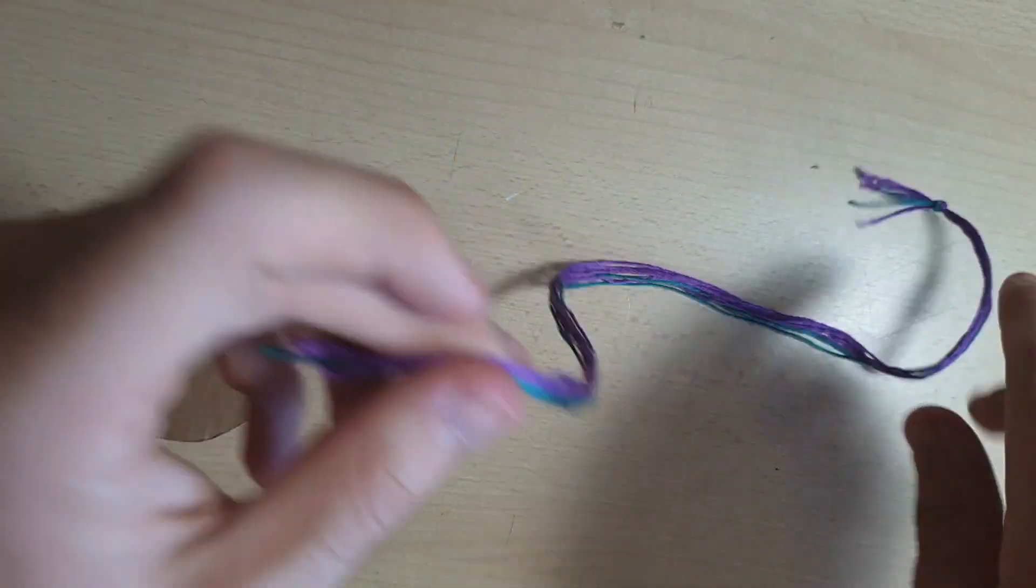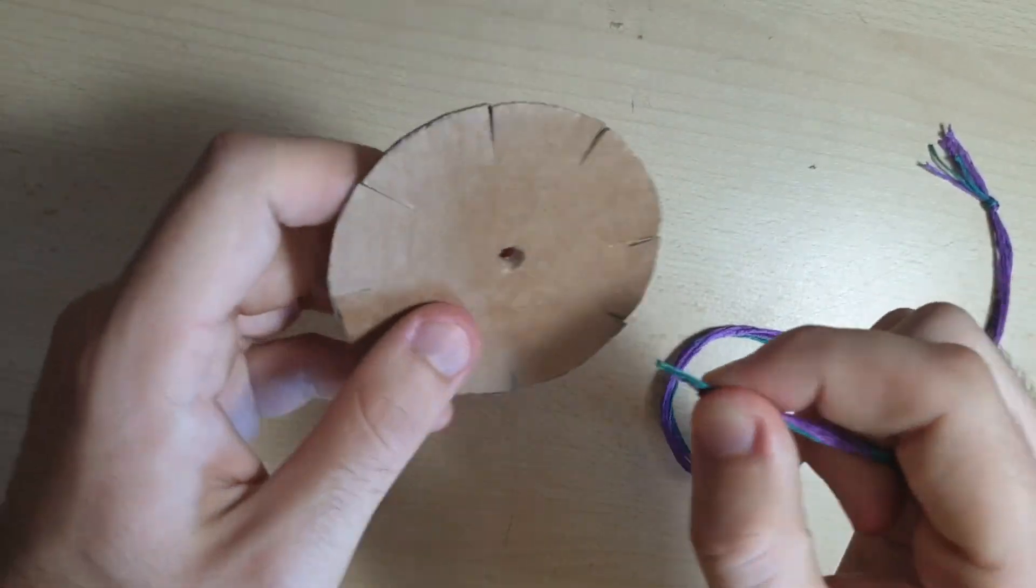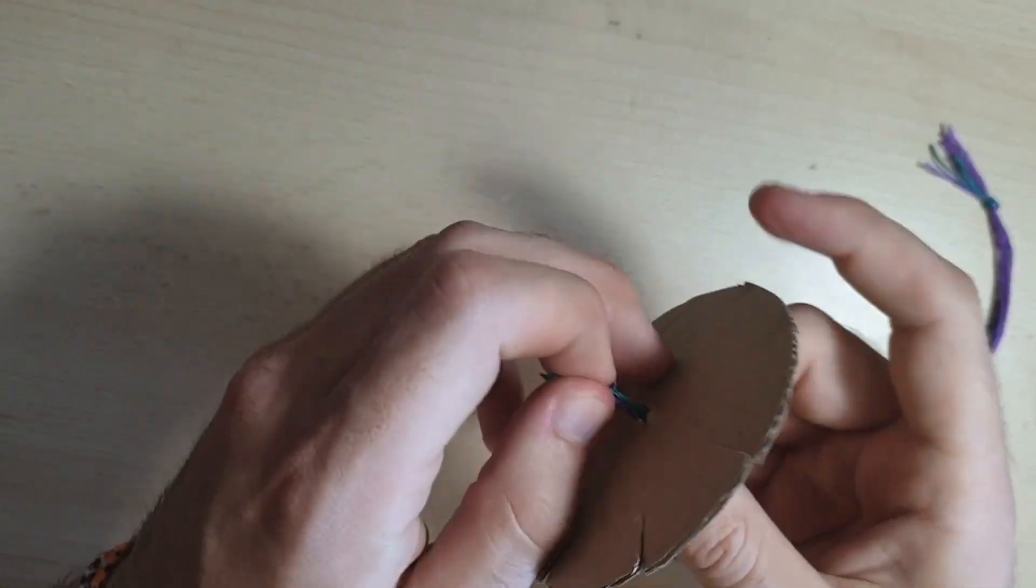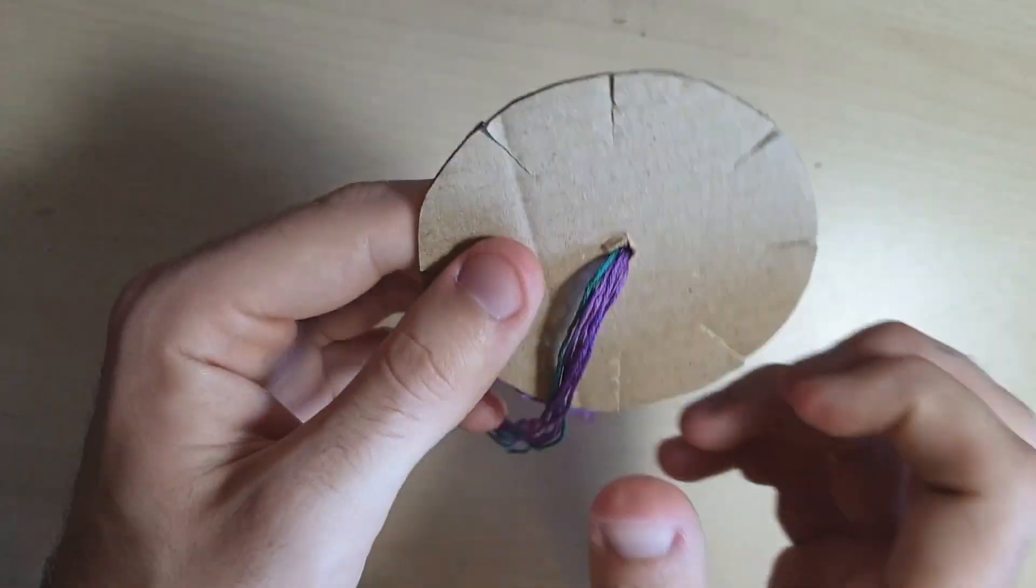The next step, you go to the other end of the string, and you now need to poke this through the hole in the centre of the cardboard loom, like so, but not pulling the knot all the way through.